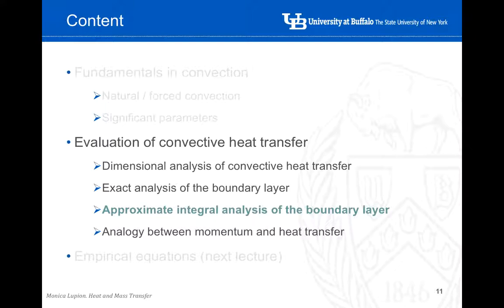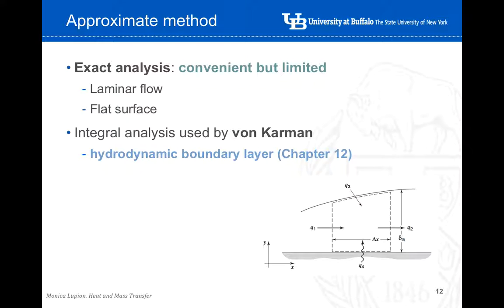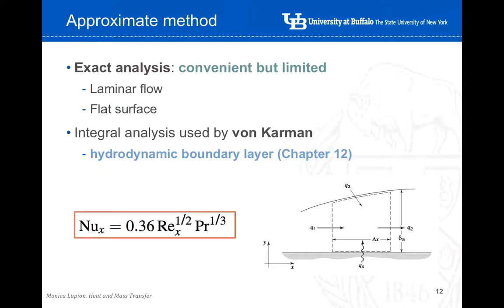Let's now take a look at the approximate integral analysis. The exact analysis works well for a flat surface and laminar flow, but it's very limited to a specific geometry. What happens if we have a completely different geometry or non-laminar flow? This integral analysis was developed by von Kármán, taking the solution from the hydrodynamic boundary layer study — you can refer to chapter 12 in your textbook. Applying this methodology, the final expression relates the local Nusselt number to the Reynolds and Prandtl numbers.